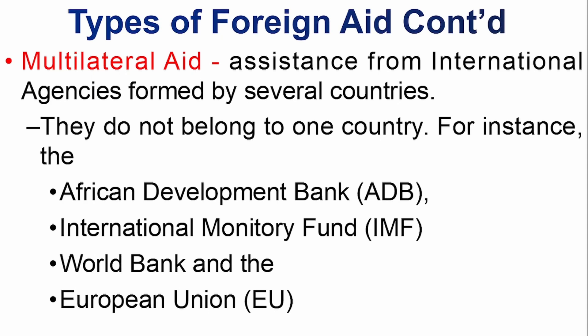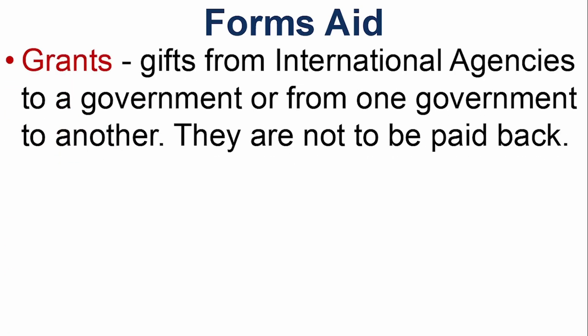Foreign aid has three forms. The first form is grants. Grants are gifts from international agencies to a government, or from one government to another. You do not pay them back — it's a gift. Some governments give aid to other countries and some agencies give aid to countries without expecting anything in return.